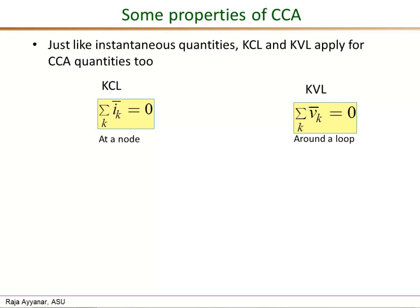Next, let's look at some of the useful properties of the cycle by cycle averaging. The first one is that just like the instantaneous quantities, the Kirchhoff's current law and Kirchhoff's voltage law, KCL and KVL, they are equally valid for CCA quantities as well.